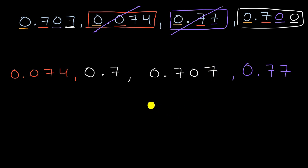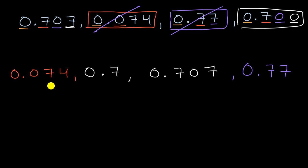And we're done. The main idea is you want to compare the most significant place values first, and then based on that, keep moving to the right to compare less and less significant place values.